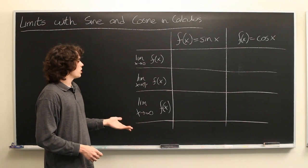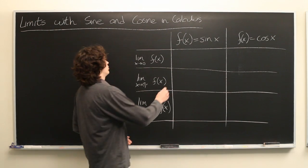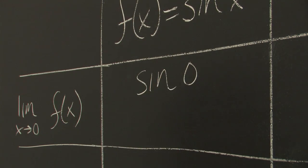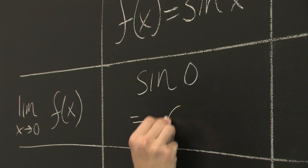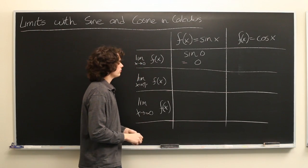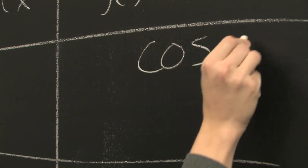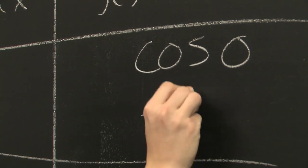So with this limit, we can simply plug in the value and see what we get. The limit is equal to sine of 0, which is just 0. Similarly for cosine, cosine of 0, which is just 1.